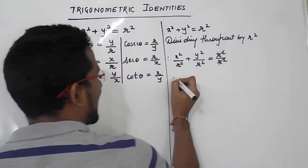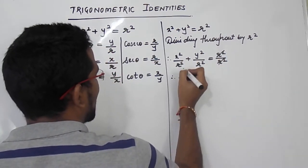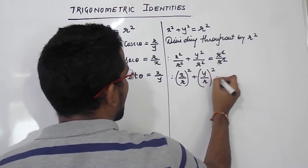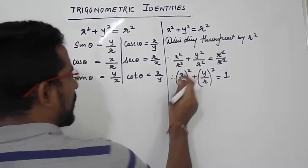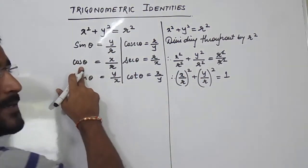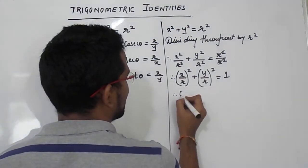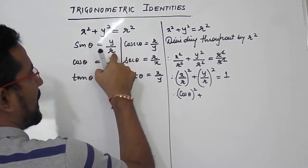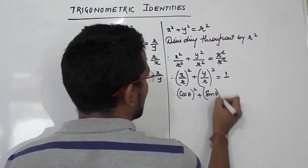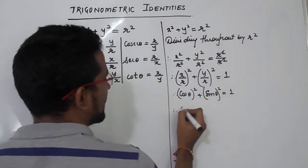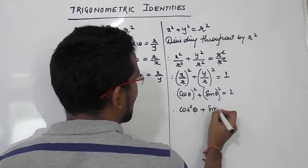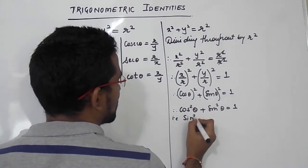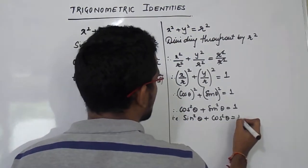The r² cancels on the right side, giving us 1. We can write the left side as (x/r)² + (y/r)² = 1. Now, x/r is nothing but cos θ, and y/r is nothing but sin θ. So we get cos²θ + sin²θ = 1, which we can write as sin²θ + cos²θ = 1.